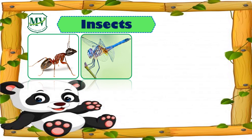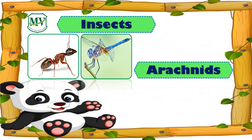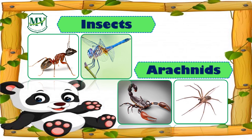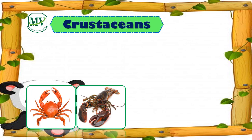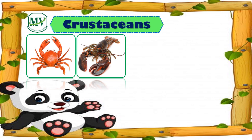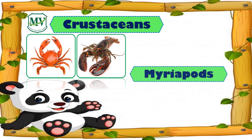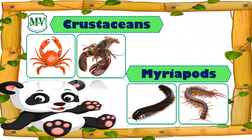Here are some examples of arthropods in different groups. Insects, like ants and dragonfly. Arachnids, like scorpion and spider. Crustaceans, like crab and lobster. And myriapods, like millipede and centipede.